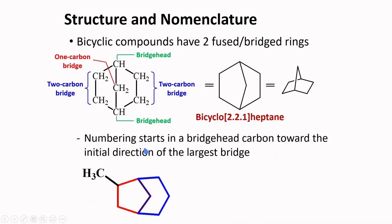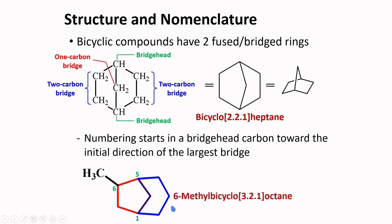If a substituent is present in the bicyclic ring, numbering starts at a bridgehead carbon and proceeds in the direction of the largest bridge. Choosing one bridgehead as carbon 1, the numbering along the largest bridge goes 2, 3, 4, 5, making a substituent position 7 from that end. Starting from the other bridgehead instead, that same substituent falls at position 6 — a smaller number. Therefore the compound is named 6-methylbicyclo[3.2.1]octane.